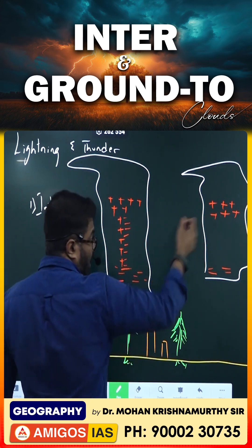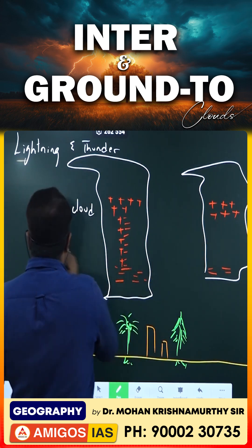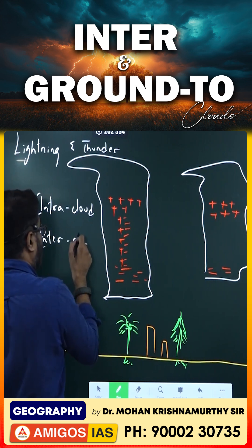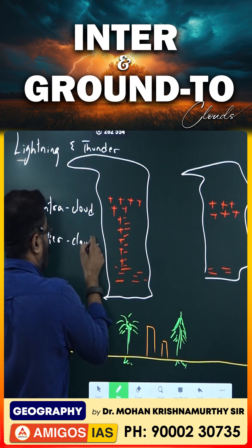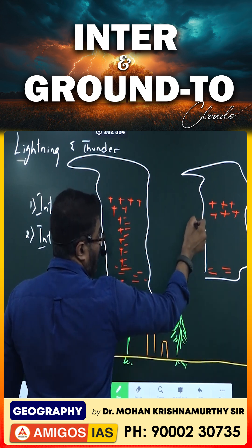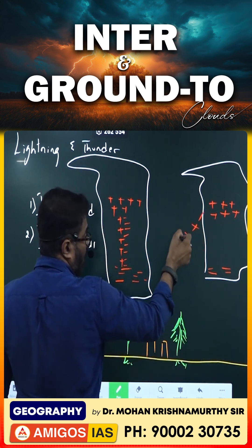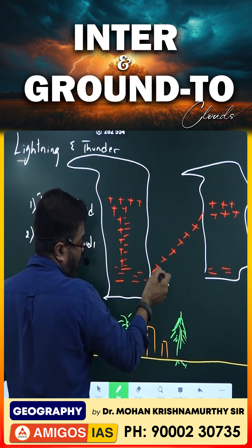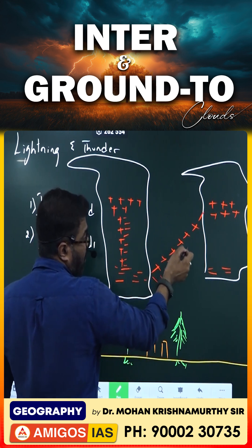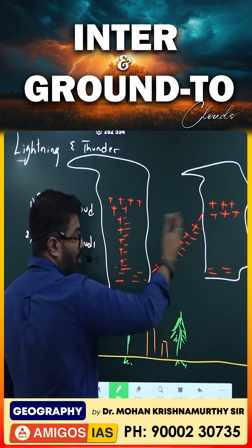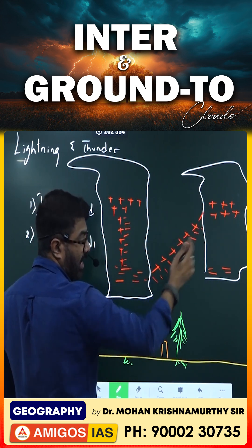Next is intercloud, the second type. Between two clouds — 'inter' means between two clouds. The charges from one cloud come down and meet the charges from the other side. The charges go up, causing lightning like this. Intercloud thunder and lightning.